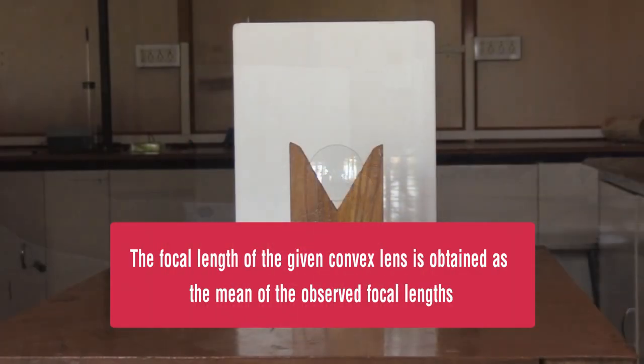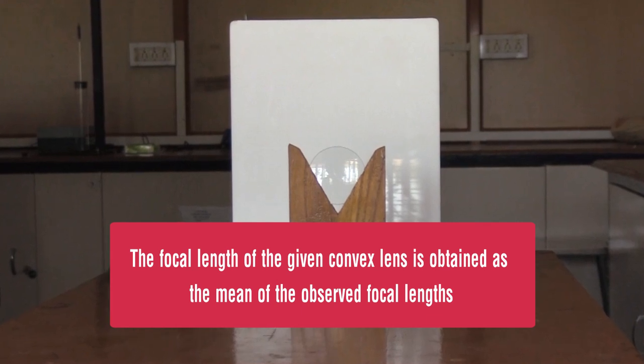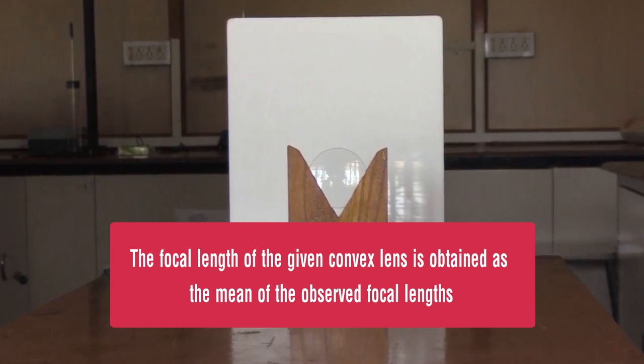Result: The focal length of the given convex lens is obtained as the mean of the observed focal lengths.